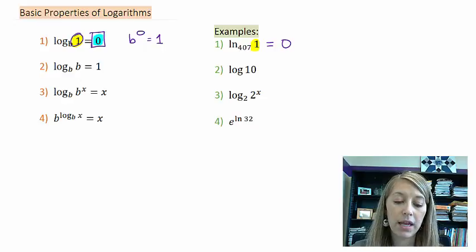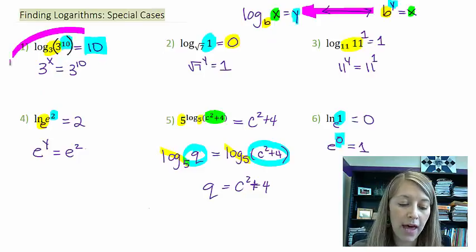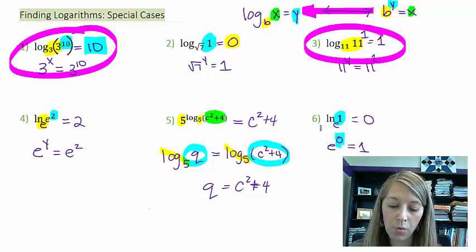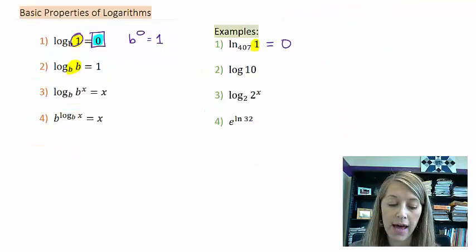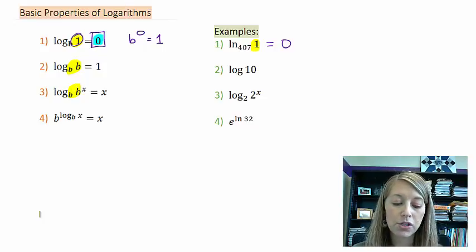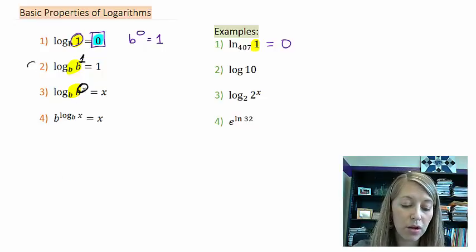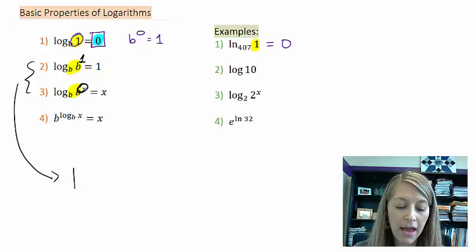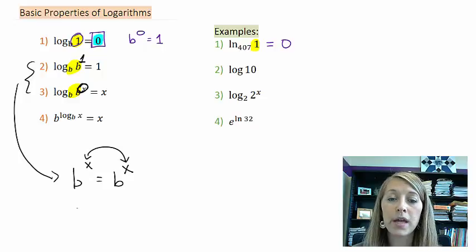Property 2 and property 3: anytime your bases match — and we saw this in several special cases — those bases essentially cancel out and give you your exponent. The big difference is that property 2 does not have an exponent defined while property 3 does. The same thing happens in both. If I convert them into exponential format, I have b to what power is equal to b to the same power — so your powers must be equal.